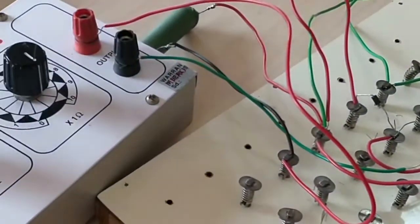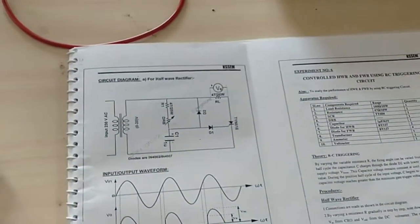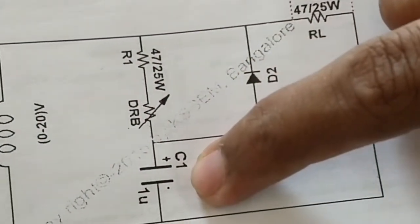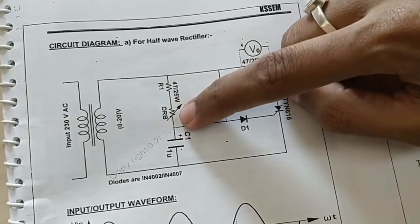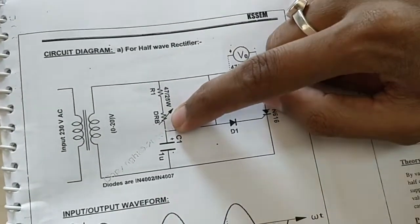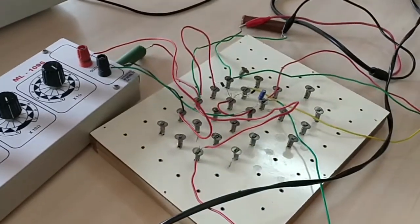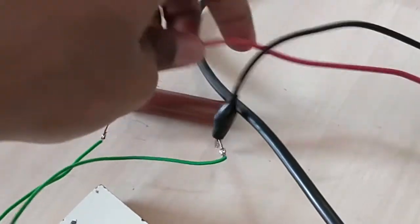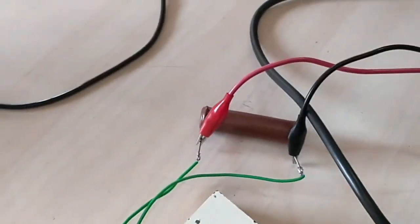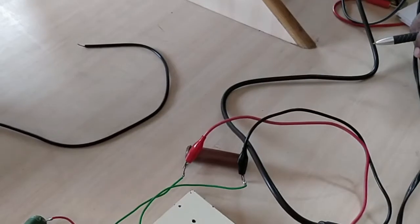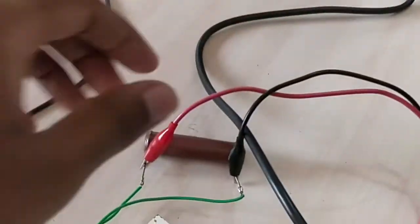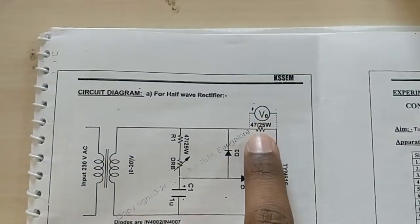You will be connecting the DRB across resistor R1 and across capacitor. We will be using this DRB to change the firing angle and then look at the output. The DSO is connected to the load, which is this RL.